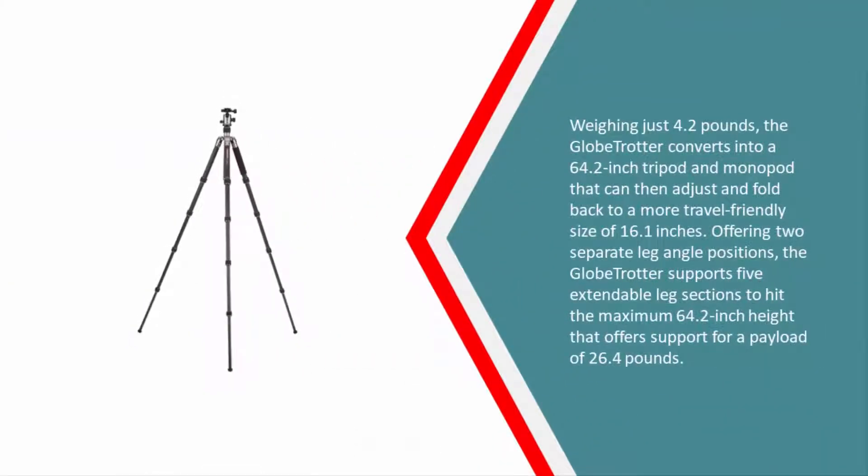Weighing just 4.2 pounds, the Globetrotter converts into a 64.2 inch tripod and monopod that can then adjust and fold back to a more travel-friendly size of 16.1 inches. Offering two separate leg angle positions, the Globetrotter supports five extendable leg sections to hit the maximum 64.2 inch height that offers support for a payload of 26.4 pounds.